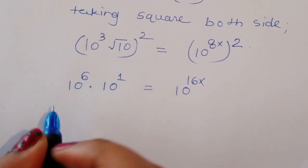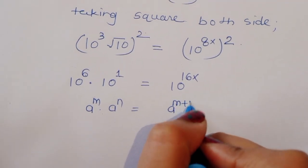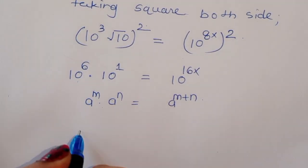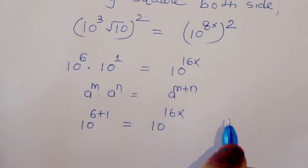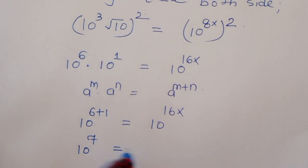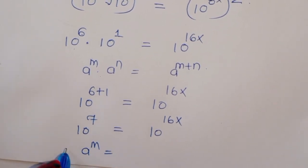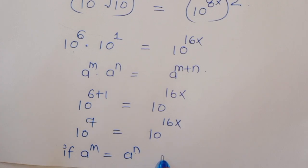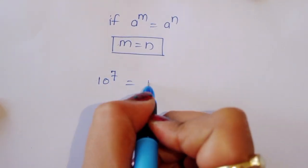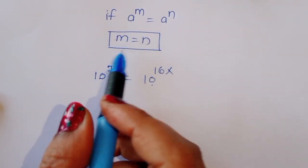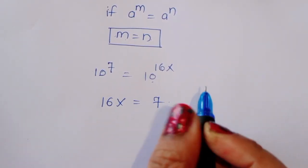Now we can write this: 10 raised to 6 times 10 raised to 1 is equal to 10 raised to 16x. We know the formula: a power m times a power n is equal to a power m plus n. So using this formula, we can write 10 raised to 6 plus 1 is equal to 10 raised to 16x — that is 10 raised to 7 is equal to 10 raised to 16x.